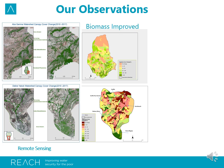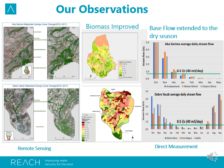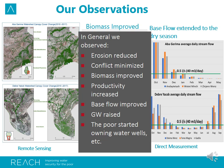We also observe change in biomass. Stream baseflow now extends to the dry season — when we started, it was completely dry. In general, in all our learning watersheds, we notice that erosion is reduced, conflict minimized, biomass improved, productivity increased, baseflow improved, groundwater raised, and the poor have started owning water wells.